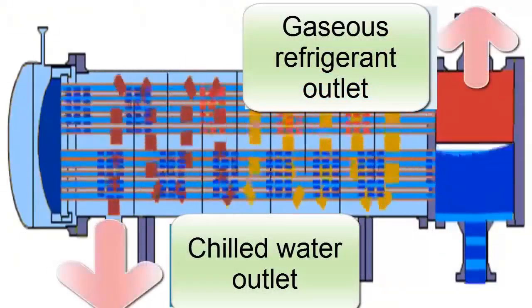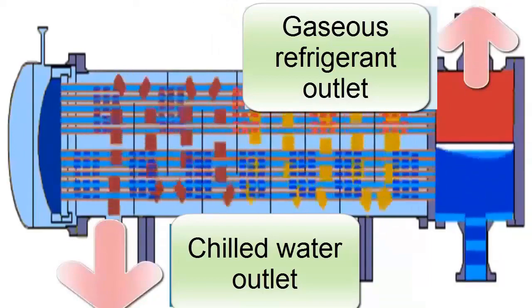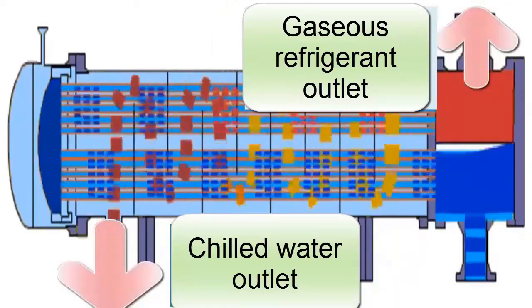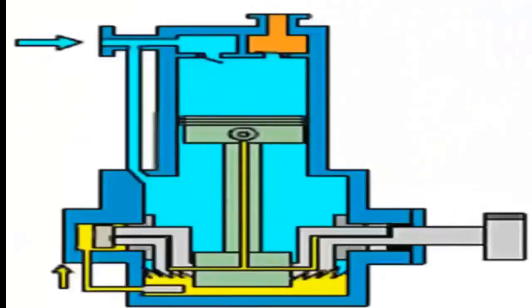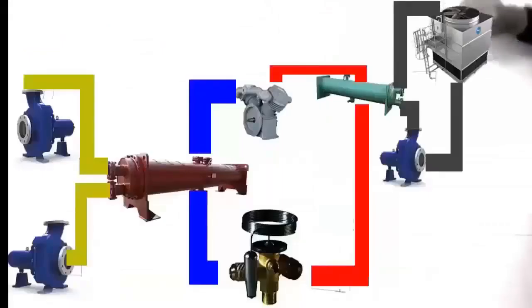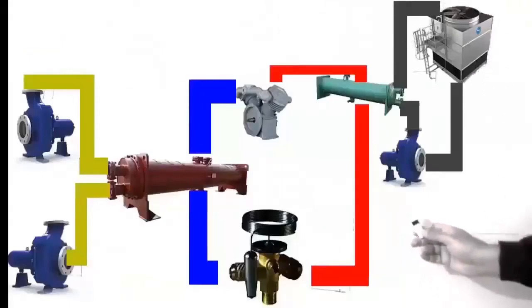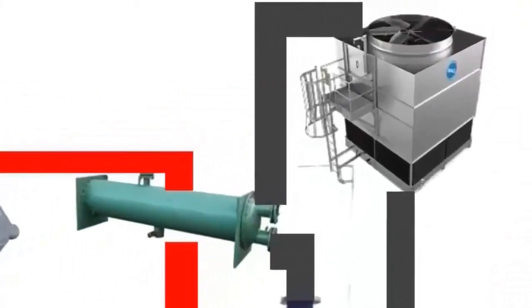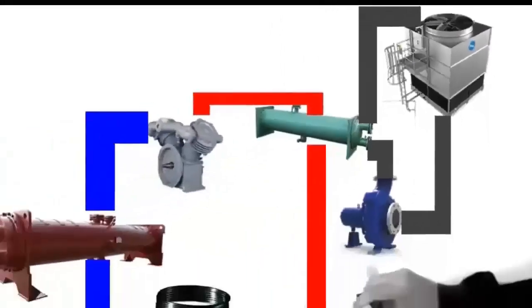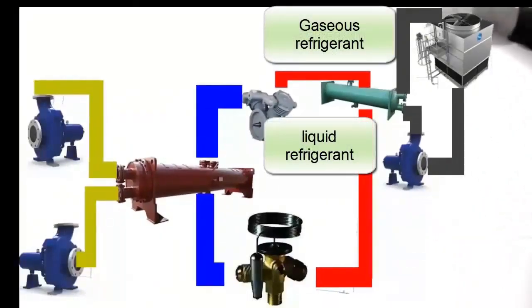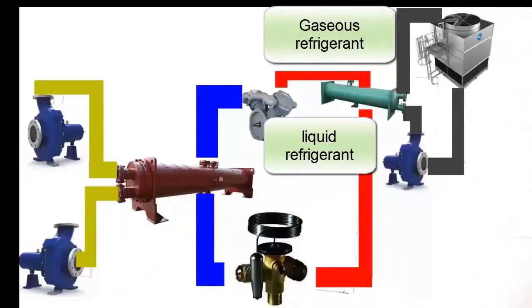So we have a phase change. In the evaporator, refrigerant enters in a liquid state and leaves in a gaseous, vapor state. That refrigerant is then subjected to compression by the compressor and sent to the condenser. In the condenser — which is what I am pointing to now — something quite important happens: the refrigerant arrives in a vapor state and we need it to return to its liquid state, requiring a phase change back.